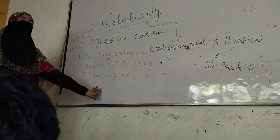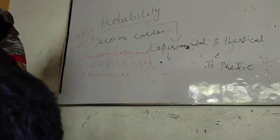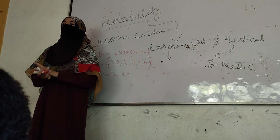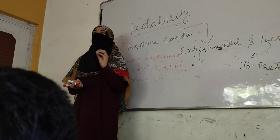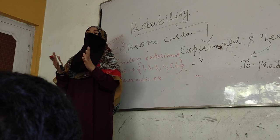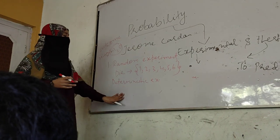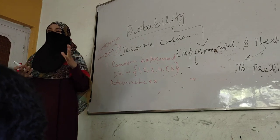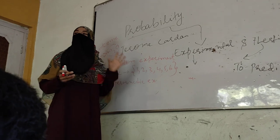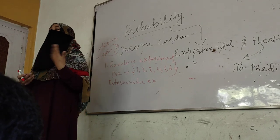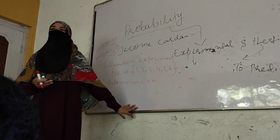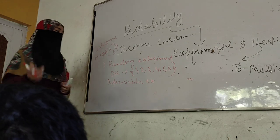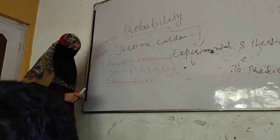Suppose we take a coin that has both sides tail. If we toss that coin, at all times we will get tail, because it has both sides as tail. If we do this experiment a hundred times with a coin having both sides tail, we will always get tail. So that time we call it a non-random experiment.